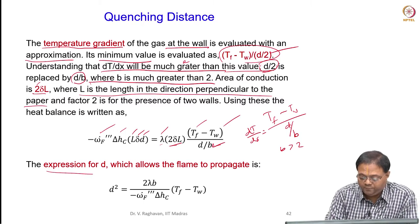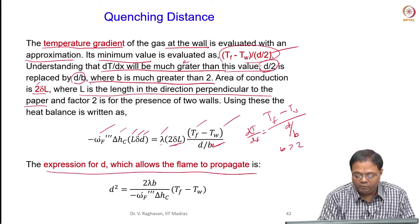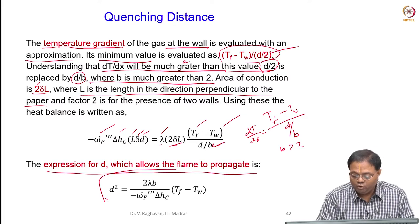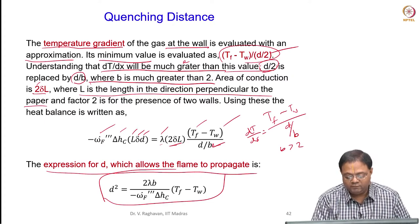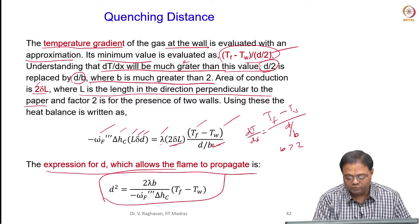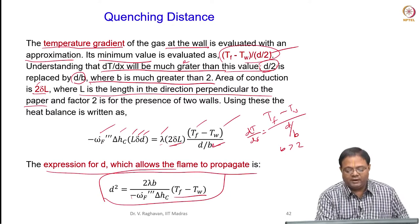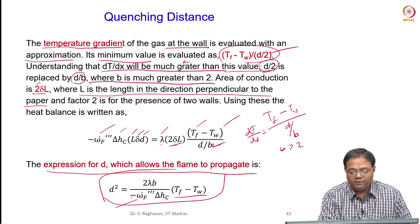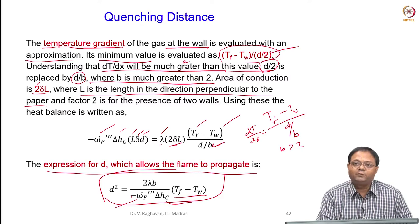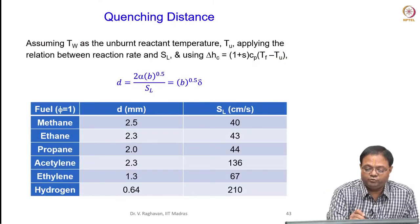Now the expression for D which allows the flame to propagate — grouping D on one side — gives D² equal to 2 times thermal conductivity times b divided by the heat released per unit volume, times (Tf minus Tw). This is heat released per unit volume. To eliminate the heat of reaction, we can put SL or δ. Similarly, this can be replaced by (1 + S) times Cp times ΔT.